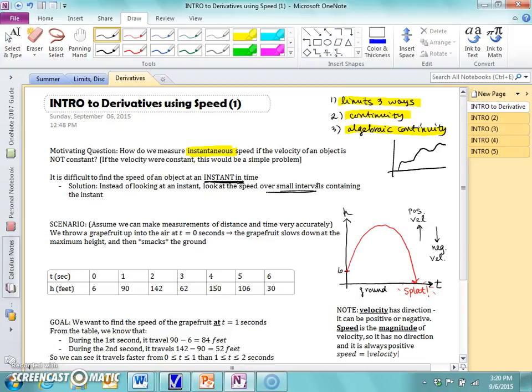So let's take this scenario. Now for this scenario, we're assuming that all the measurements of distance and time are accurate. We're going to throw a grapefruit up in the air at t equals zero seconds. That would be right here, starting six feet off the ground. The grapefruit is going to go up here at the max height. It stops for a second, and then it goes down. It speeds up until it splats against the ground.